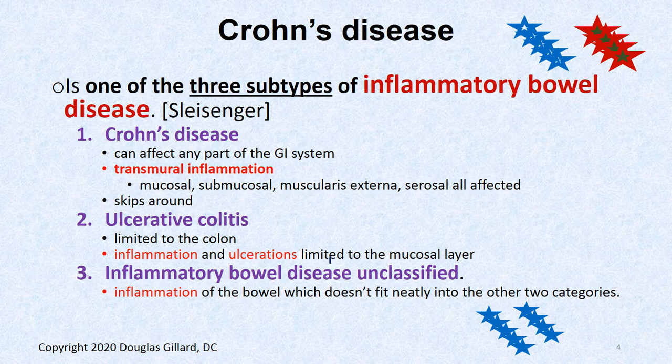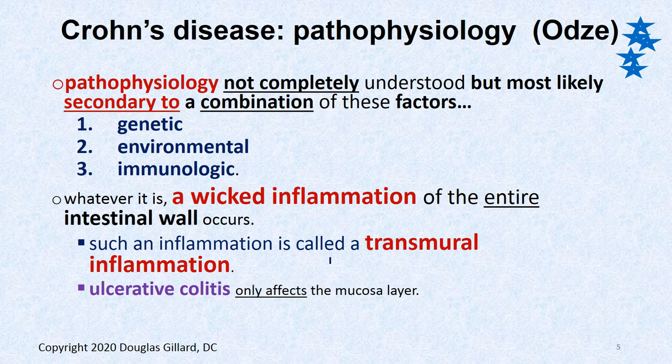Unlike Crohn's disease, about a third of patients with ulcerative colitis will need surgery to remove the diseased part of the colon. The pathophysiology is not completely understood, but there are three contributing factors: genetic, environmental, and immunologic. The adipocytes can actually become involved in the inflammation in this condition.